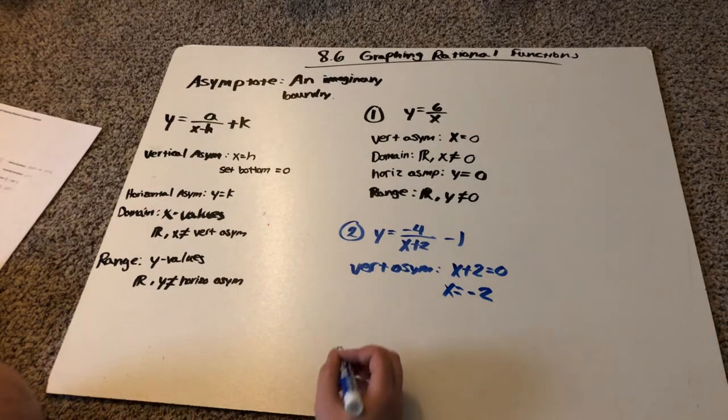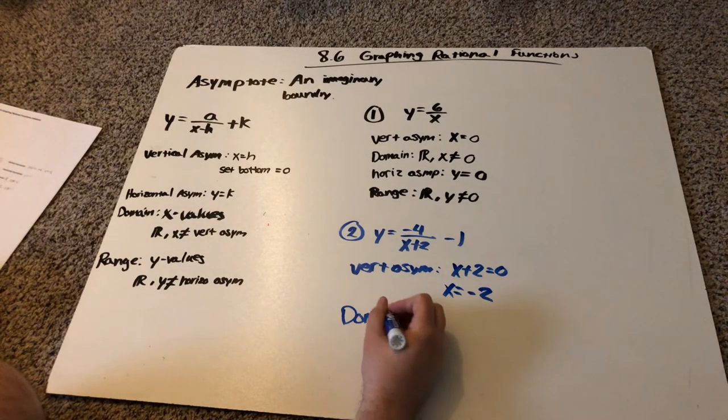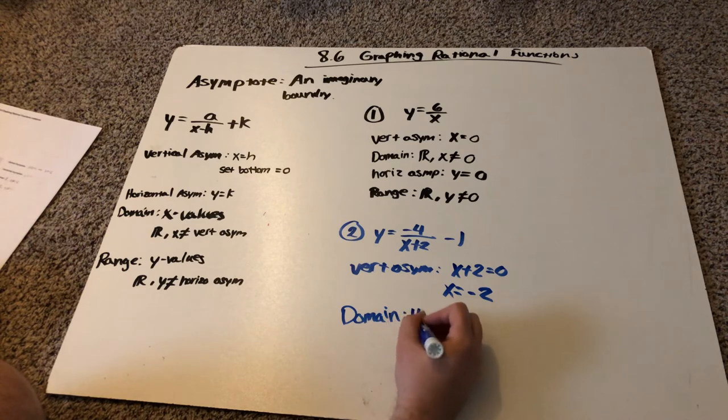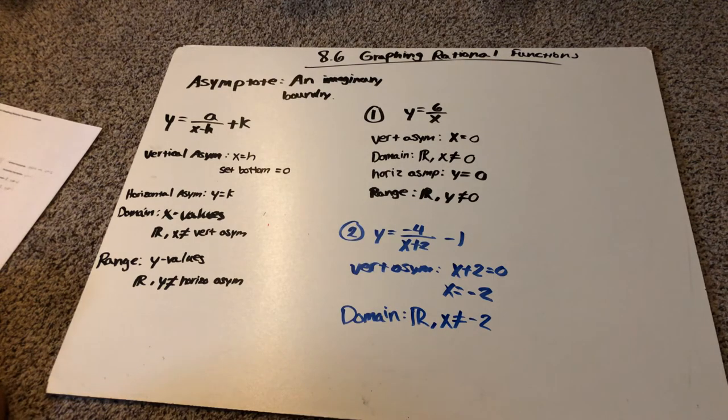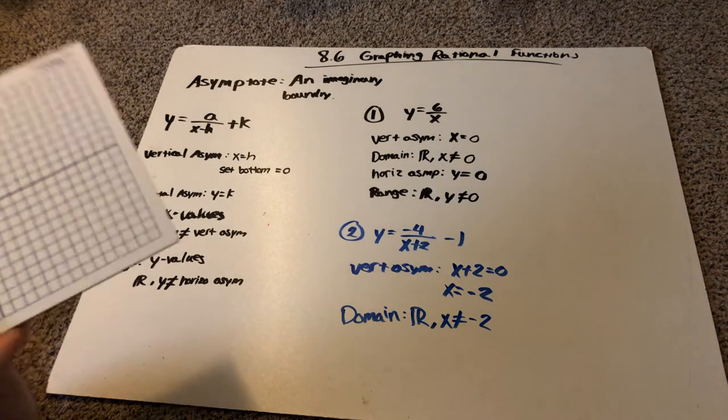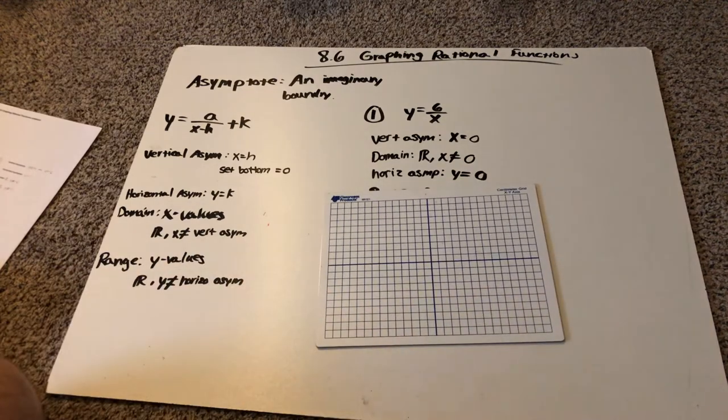So that means for my domain, it's going to be all real numbers except x could not be negative two. So on my graph, I'm going to draw a vertical line at negative two because we said x is equal to negative two.